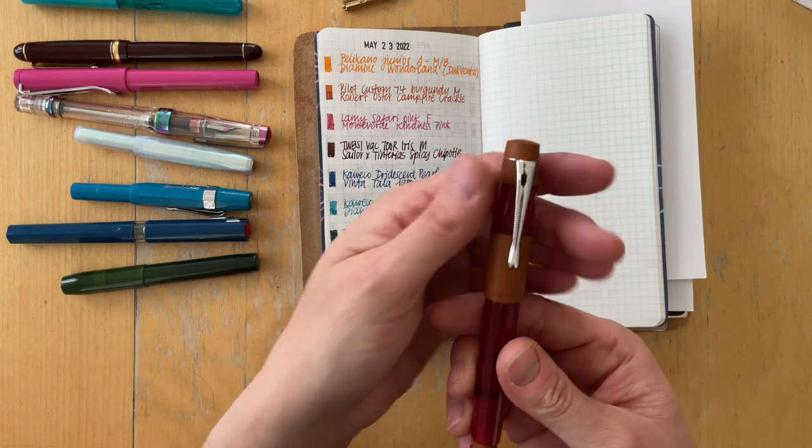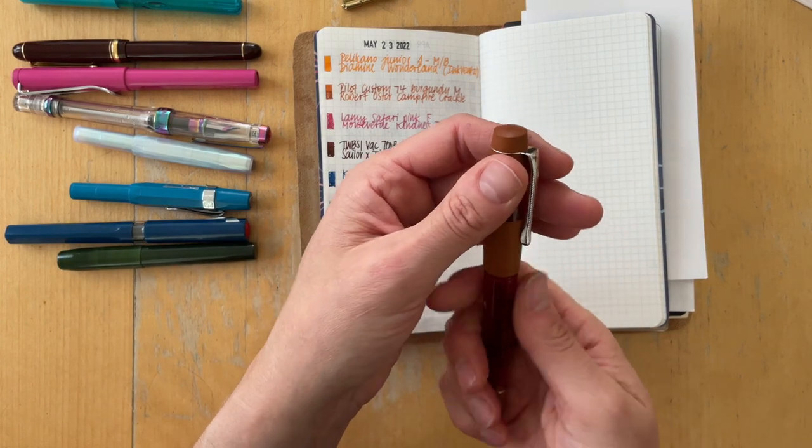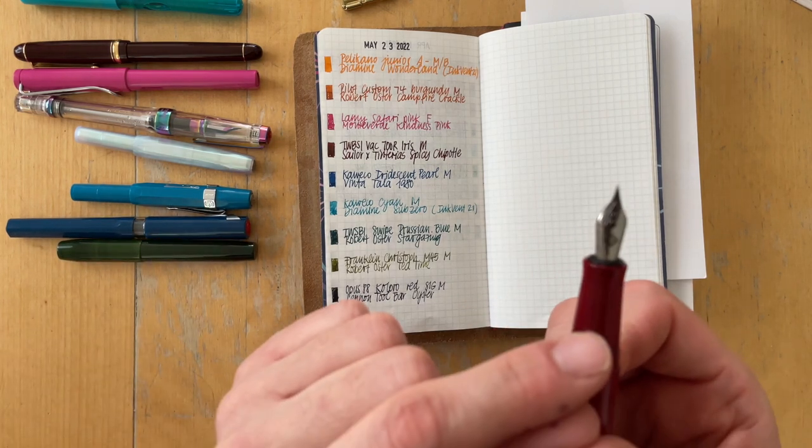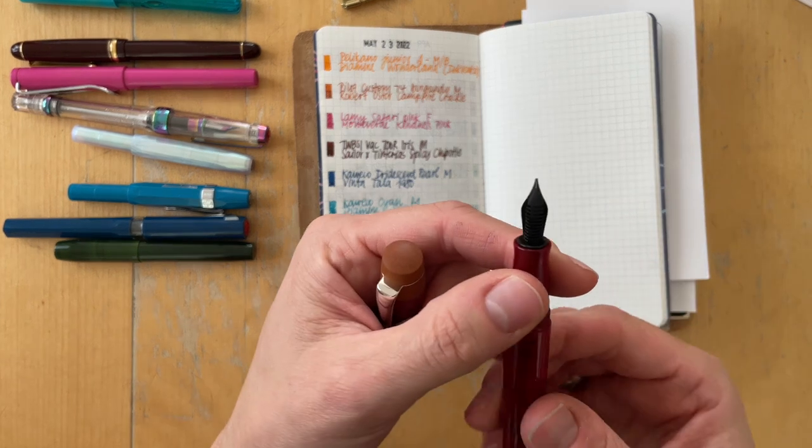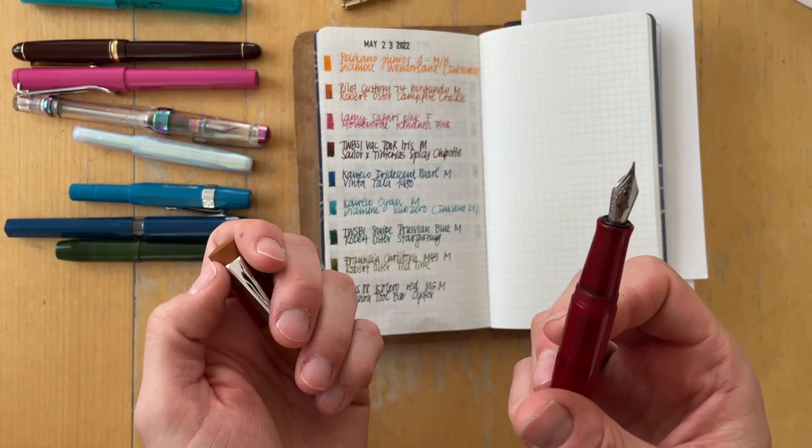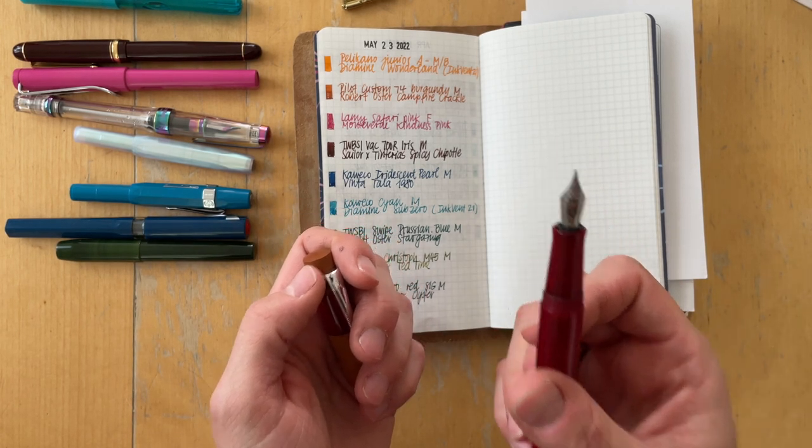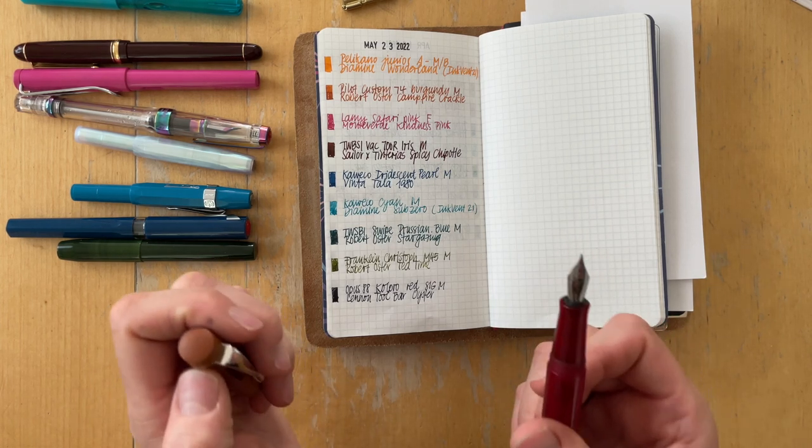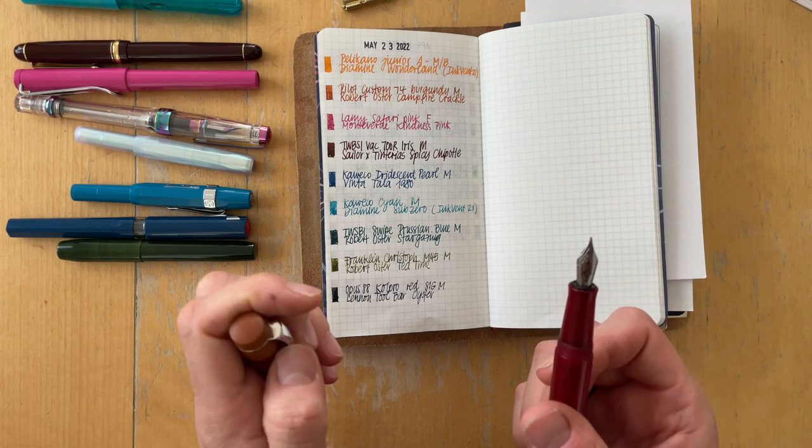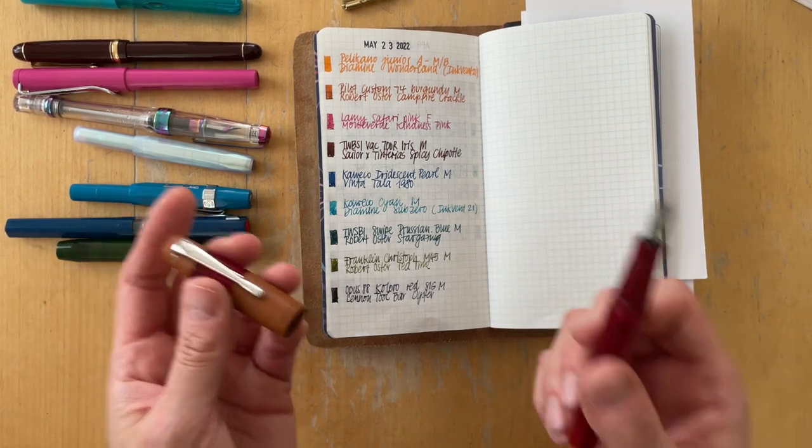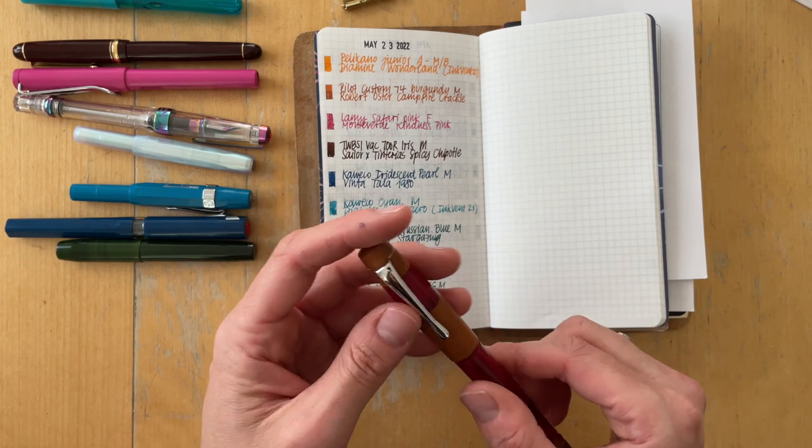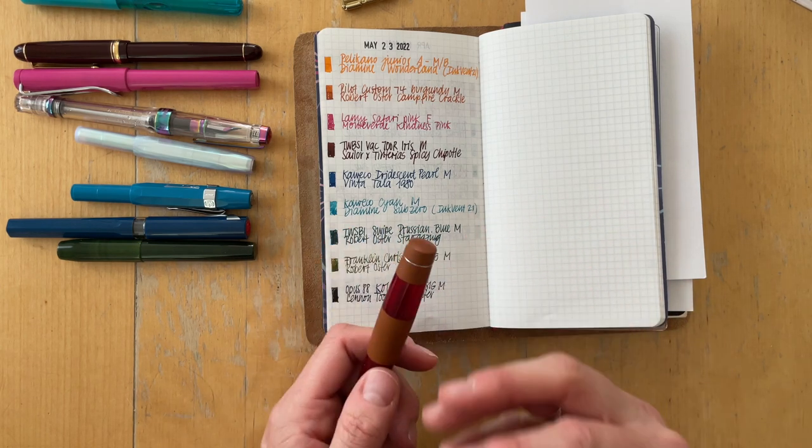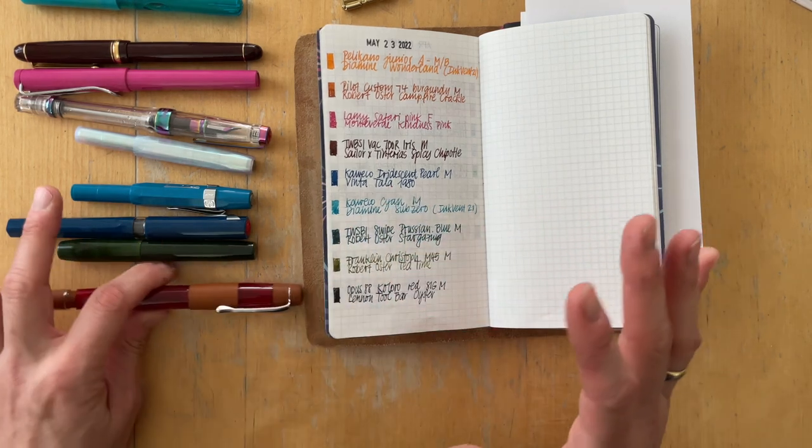And then this last one was the Opus 88 with the Franklin Christoph nib that was originally on this pen. It's a SIG medium nib. SIG stands for stub italic gradient every time I have to think about it. And I am still not 100% sure that this is a nib for me. I uninked it, even though it was still full because I just don't gravitate towards it. And so I just want to give it another chance with another ink, maybe in another pen. I don't know yet.